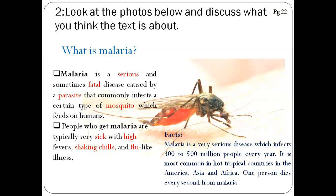Malaria is a very serious disease which infects 300 to 500 million people. Remember the quantity: 300 to 500 million people every year. It is most common in hot tropical countries in the Americas, Asia, and Africa. One person dies every second from malaria.